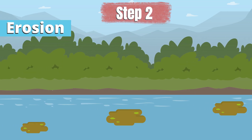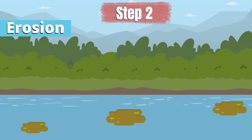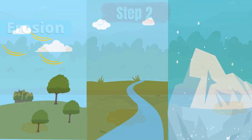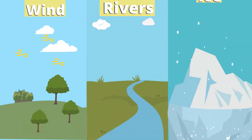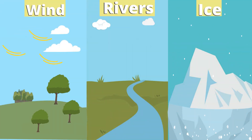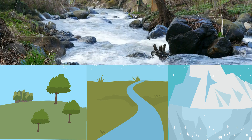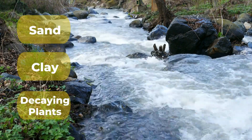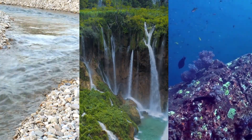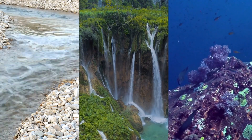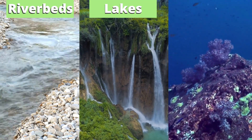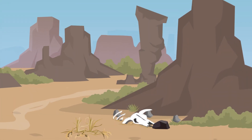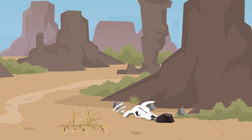Step 2: Erosion — moving the sediments. Once weathering has broken down rocks and mixed organic material, the next step is erosion. Erosion is a process where natural forces like rivers, wind, or ice carry these particles away from their original location. Imagine a rushing river picking up sand, clay, and decaying plants, sweeping them along in the current. Erosion is crucial because it moves the sediments to new environments such as river beds, lakes, or the ocean floor, where they will eventually settle. Without erosion, these particles would never find their way to the places where fossil fuels can form.